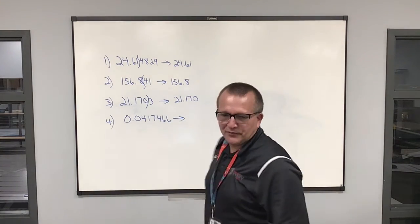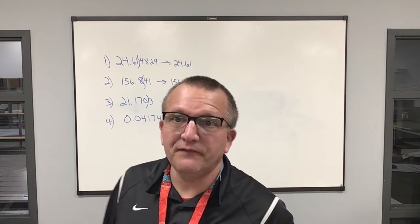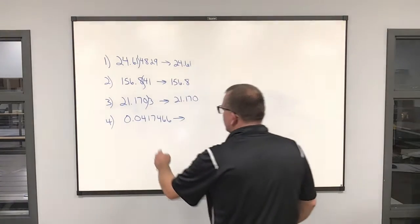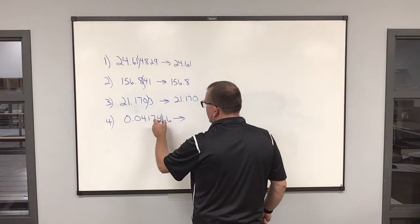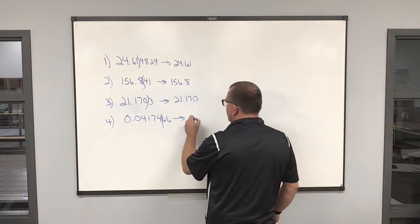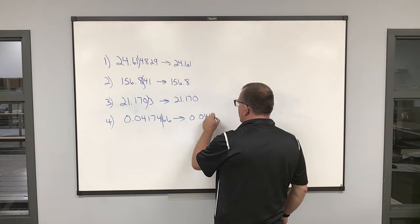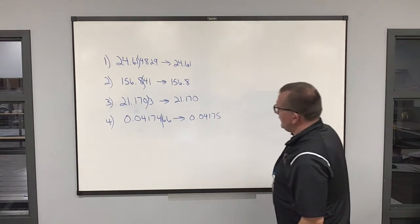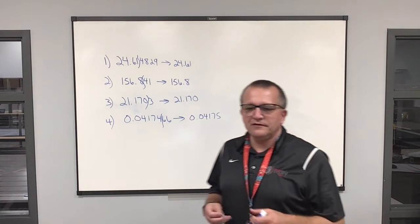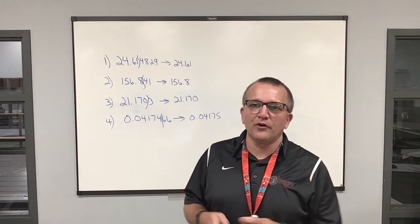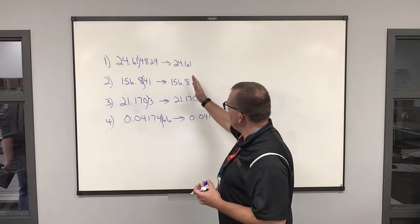And lastly, number four, I want to round to five places after the decimal. One, two, three, four, five. Six tells me to round up. And here. So with addition and subtraction, number of sig figs is as important as accuracy of the measurement, and that's how we round.